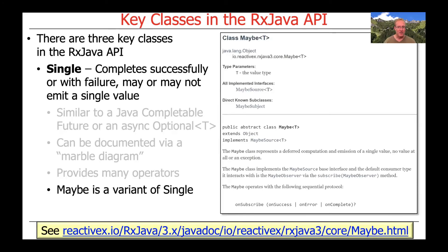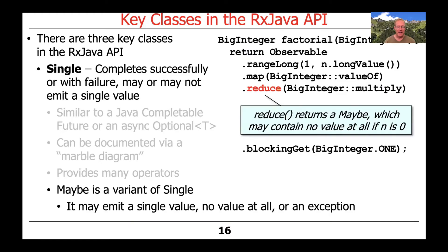There's also another variant of a Single called a Maybe. A Maybe may emit a single value, it may emit no value at all, or it may throw an exception. Maybes typically get used in cases where operators may have no values whatsoever because other parts of RxJava's type system don't have any input to them. For example, if you're doing an operation that multiplies elements in a stream together and there are no elements in the stream to multiply, you get back a Maybe which in that case would emit no value at all. There is no such equivalent in Project Reactor.